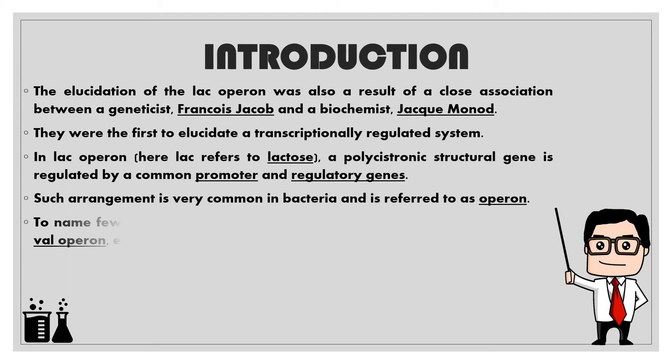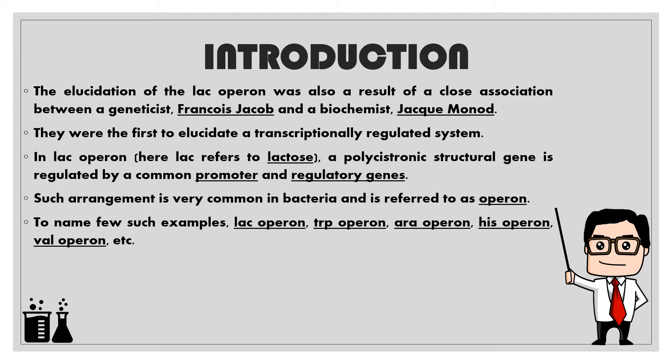The elucidation of the lac operon was a result of a close association between geneticist François Jacob and biochemist Jacques Monod. They were the first to elucidate a transcriptionally regulated system. In the lac operon, 'lac' refers to lactose. A polycistronic structural gene is regulated by a common promoter and regulatory genes. Such an arrangement is very common in bacteria and is referred to as an operon.